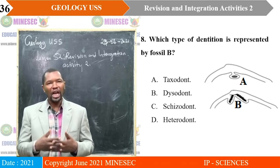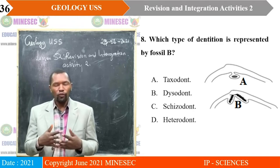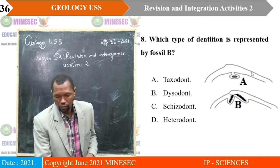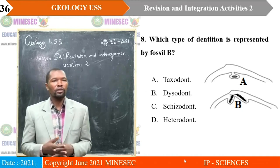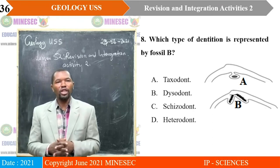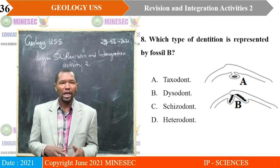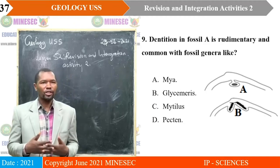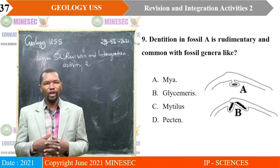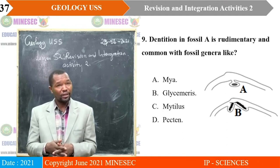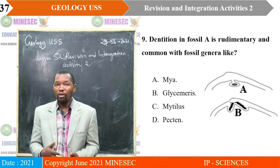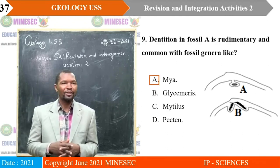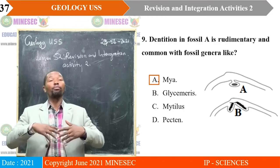Question eight: which type of dentition is represented by fossil B in the diagram? A. Taxodont, B. Dysodont, C. Schizodont, D. Heterodont. Correct answer is C, Schizodont. Question nine: dentition in fossil A is rudimentary, uncommon with fossil genera like — A. Mya, B. Glycymeris, C. Mytilus, D. Pecten. Correct answer is A, Mya. Rudimentary means there are only impressions — the teeth are not really fully developed.